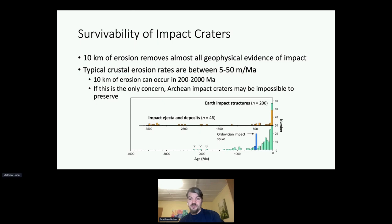What does this tell us about survivability of impact craters? We've had about 10 kilometers of erosion at Vredefort, and that has removed almost all of the geophysical evidence of the impact. The typical crustal erosion rates are between 5 and 50 meters per million years if a surface is continuously exposed. That means 10 kilometers of erosion can occur in as little as 200 million years, but will almost certainly happen within 2 billion years. So if that's the only process going on, it may be impossible for Archean impact craters to be preserved.